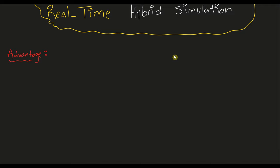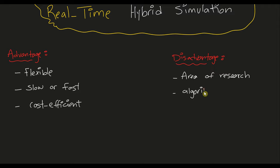The advantages of hybrid simulation are that it's a flexible method. We can run it at slow or fast speeds, depending on the research and the applications we're interested in. It is cost-efficient. And the disadvantage is that it's still an area of research. And a lot of the algorithms that exist within this method are still not very perfect.